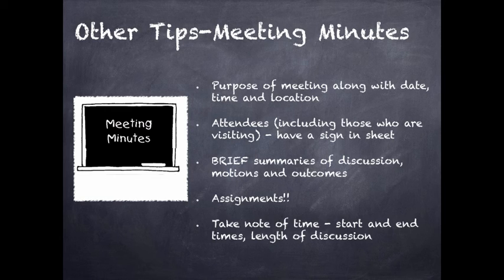Please make sure attendees are listed in your meeting minutes however you decide to do that. Brief summaries of discussion are very appropriate, along with motions, outcomes, and roll call votes if it is a funding decision. Roll call votes are where we actually record who voted in which fashion — Bob voted yes, Sally voted no, etc. Good meeting minutes that are complete in their summaries, discussion, and outcomes can be great for outlining assignments. Take note of your start time, end time, and lengths of discussion — if reviewing your school land trust plan takes four minutes, just write four minutes.